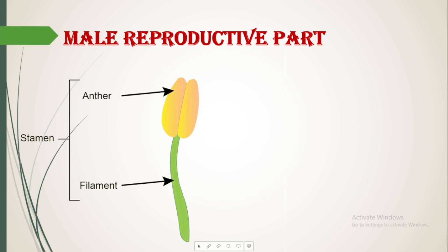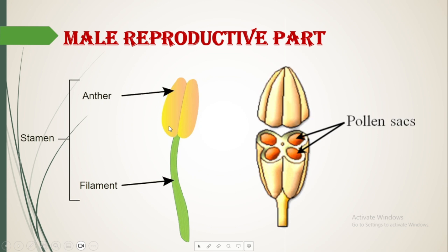Let's study each part in detail. The male reproductive part is the stamen, divided into two parts: the upper one is the anther and the lower tube-like structure is the filament. Inside the anther we have pollen grains. As you can see in the magnified image of the anther, inside it we have pollen sacs, and inside the pollen sacs pollen grains are produced.